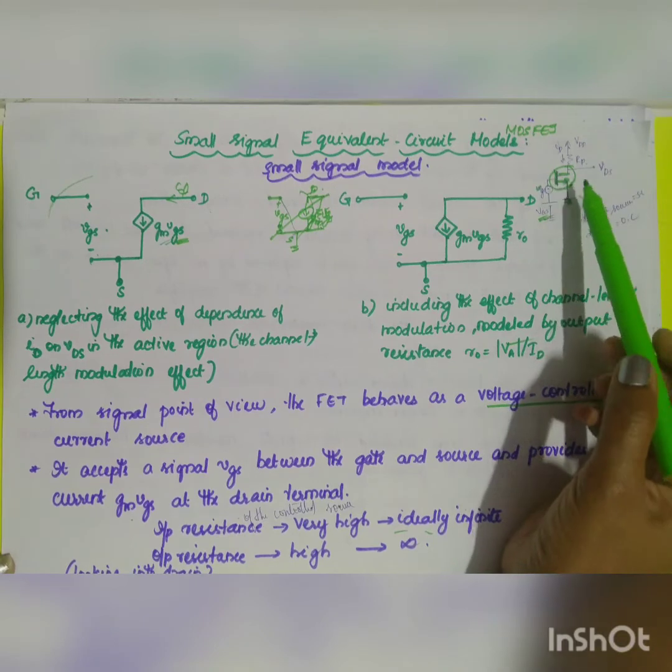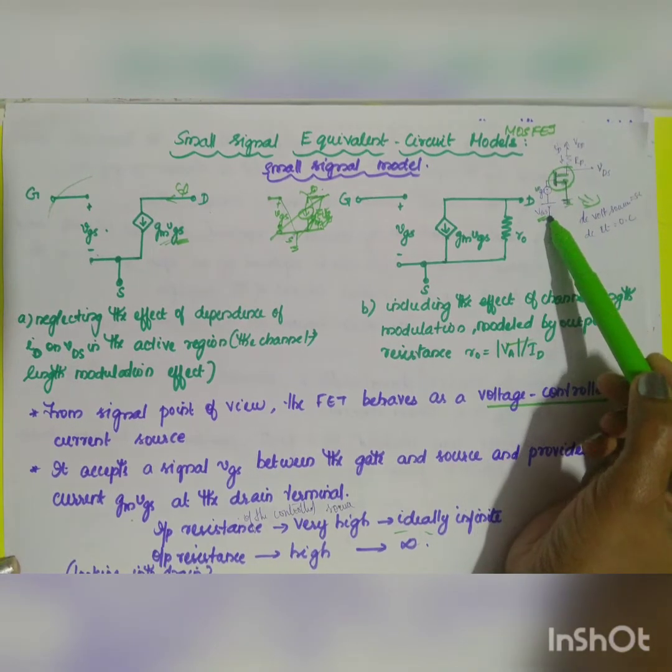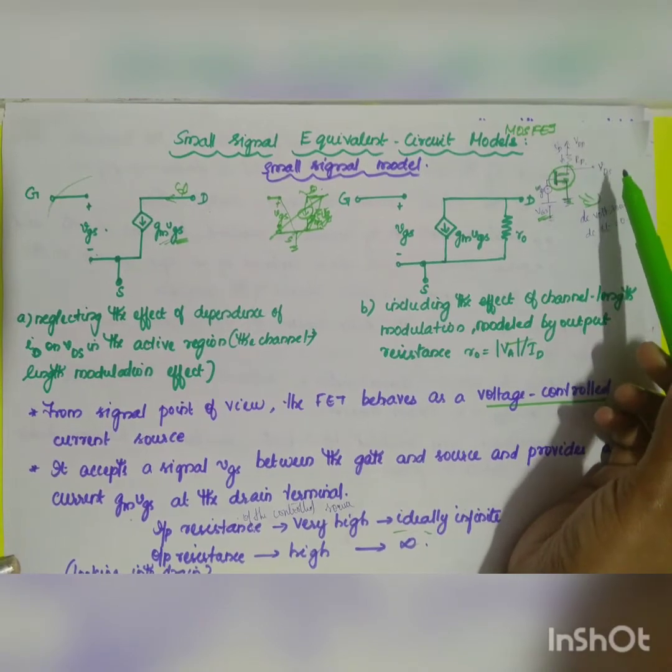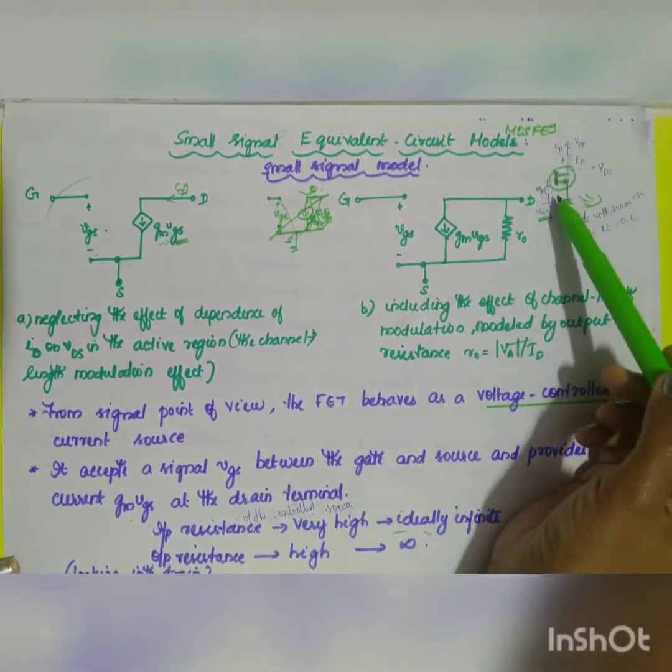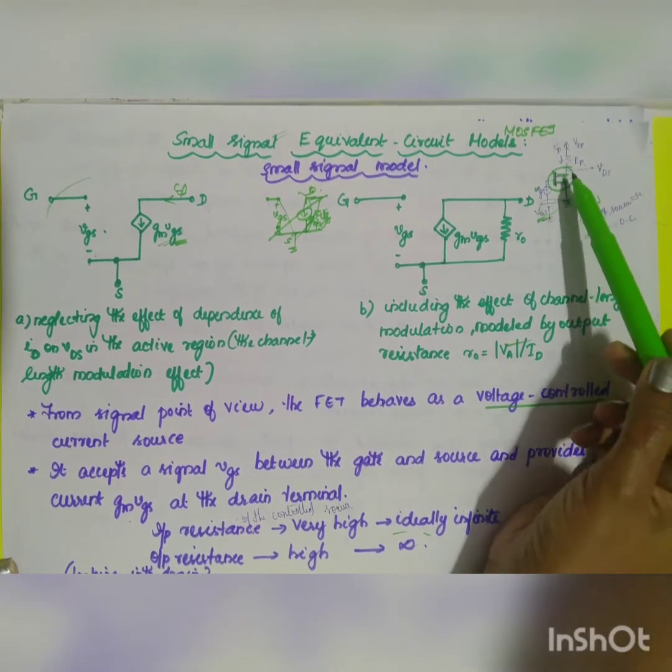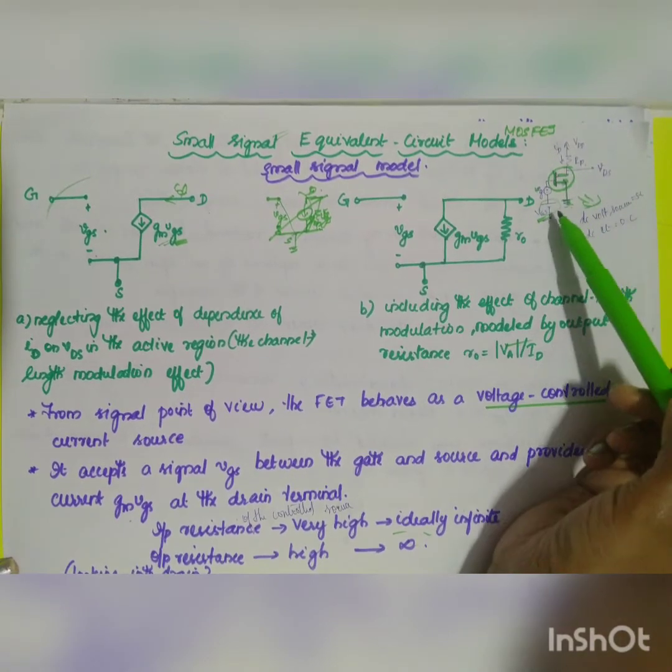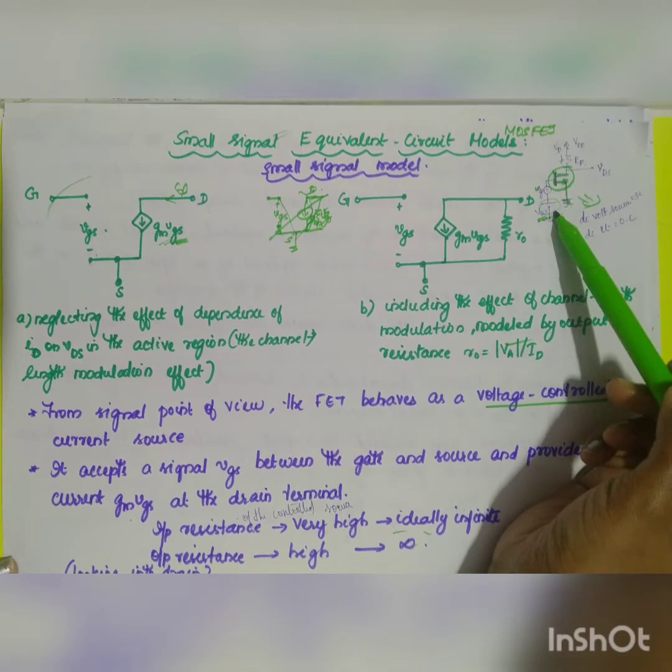In the previous video you had your signal, that is your AC signal as well as your DC signal. If you want to convert this into small signal equivalent, what are the two conditions you have to do? You have to make all the DC voltage as short circuit and the DC current as zero. In this case the DC voltage, for example VGS, should be made as short circuit.